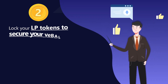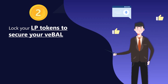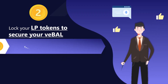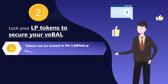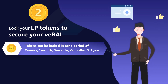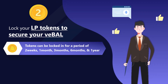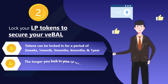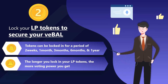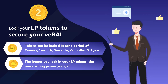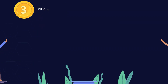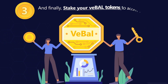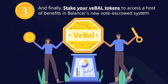Step 2: Lock your LP tokens to secure your Veble. Tokens can be locked in for a period of two weeks, one month, three months, six months, and one year. The longer you lock in your LP tokens, the more voting power you get. And finally, Step 3: stake your Veble tokens to access a host of benefits in Balancer's new Vote Escrowed System.